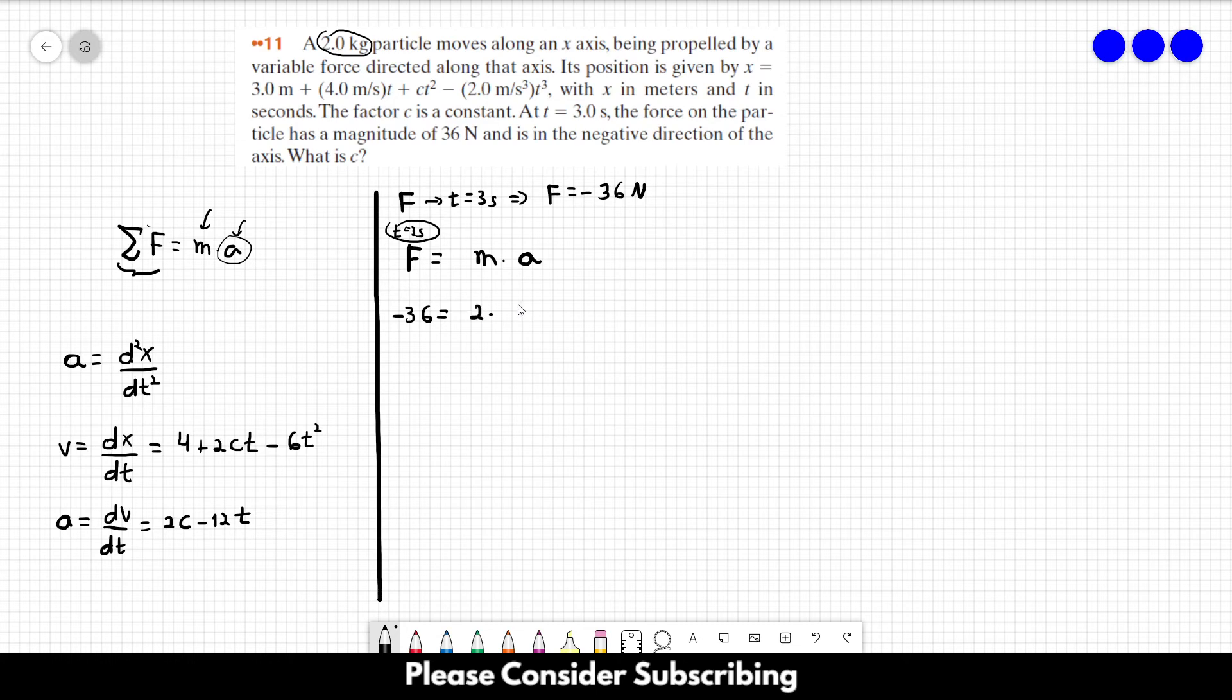So minus 36 is equal to the mass, which is 2 times the acceleration when t is equal to 3 seconds.